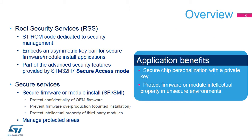Root Secure Services, or RSS, are ST ROM code that are part of the STM32H7 security features. These firmware services are available in Secure Access Mode, the new security device configuration introduced with the STM32H7 series. The main secure service provided by RSS is the Secure Firmware Install, or SFI.